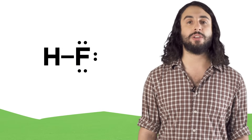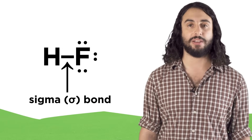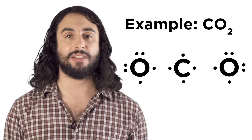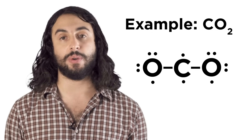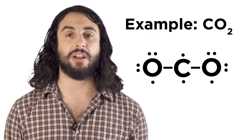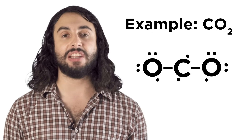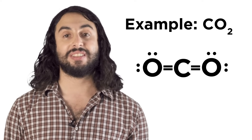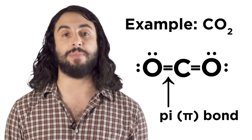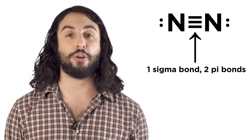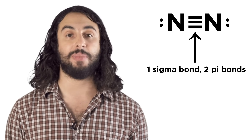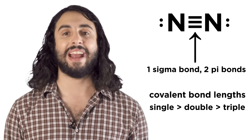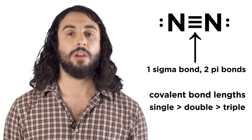When two atoms have one covalent bond between them, we call that a sigma bond, but atoms can have double or even triple bonds. Look at carbon dioxide — after we make a sigma bond between the atoms, there are still unpaired electrons. If adjacent atoms each have unpaired electrons, they can become another covalent bond. The second covalent bond in a double bond is called a pi bond. The second and third bonds in a triple bond are also pi bonds. Single covalent bonds are the longest, double bonds are a little shorter, and triple bonds are shorter still. More on these later.